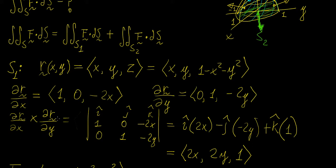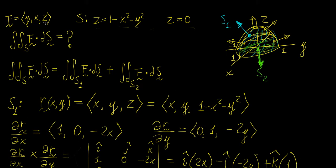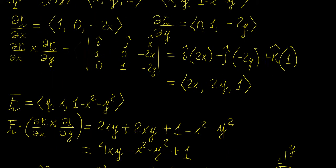We need to take the dot product with F, but first we must express F in terms of the parametrization. Wherever we see z in F, we replace it with the surface expression for S1, so z becomes 1 minus x squared minus y squared. Thus F equals (y, x, 1 minus x squared minus y squared). Taking the dot product gives y·2x = 2xy, then x·2y = 2xy again, and then the last component. Grouping terms, 2xy + 2xy = 4xy plus the remaining term — this is the function we integrate.